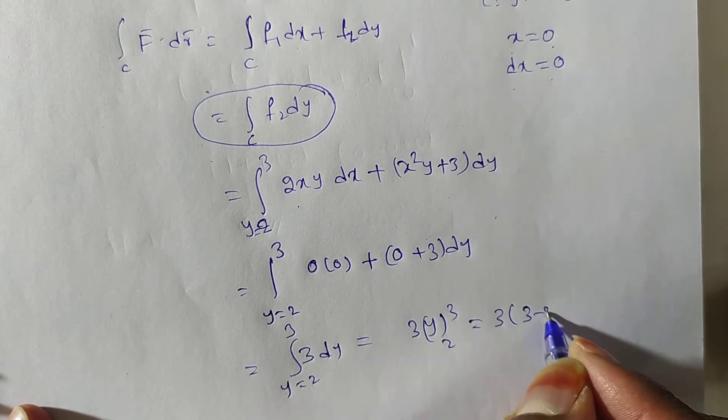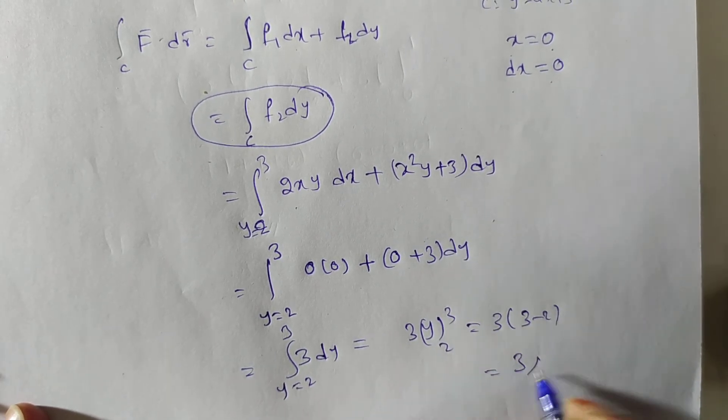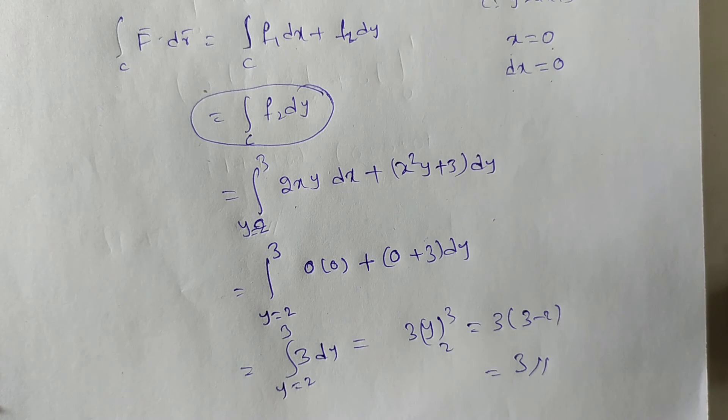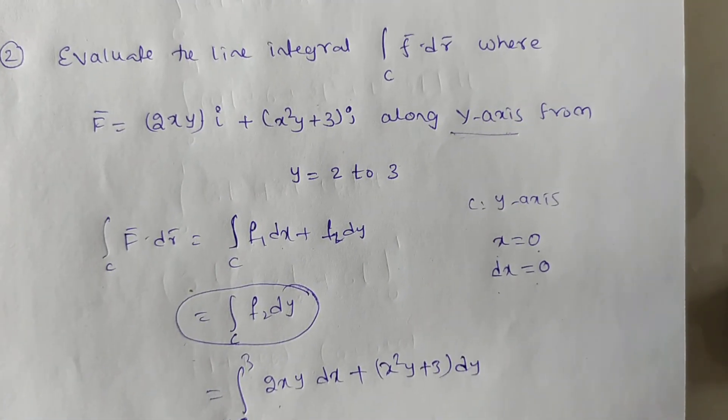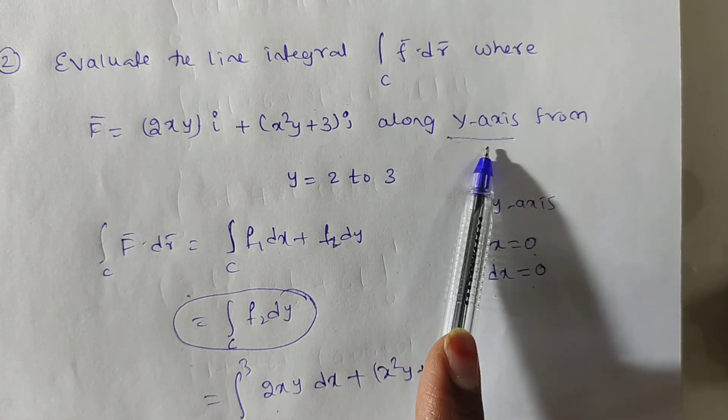So 3 times (3 minus 2), that is 3 is the answer. Are you understood clearly? You see, this problem, what I have done? Only integral f dot dr along the y-axis.